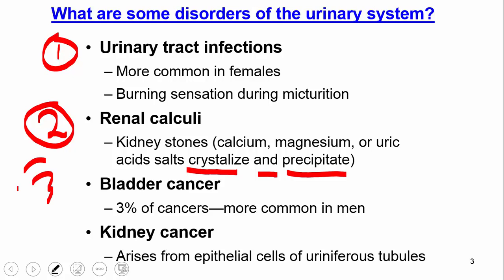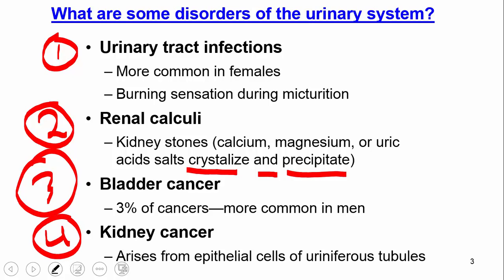Third is bladder cancer — about three percent of cancers are bladder cancers and they are more common in men than in women. Fourth is kidney cancer, which arises from the epithelial cells of the tubules in the kidney that we discussed earlier.